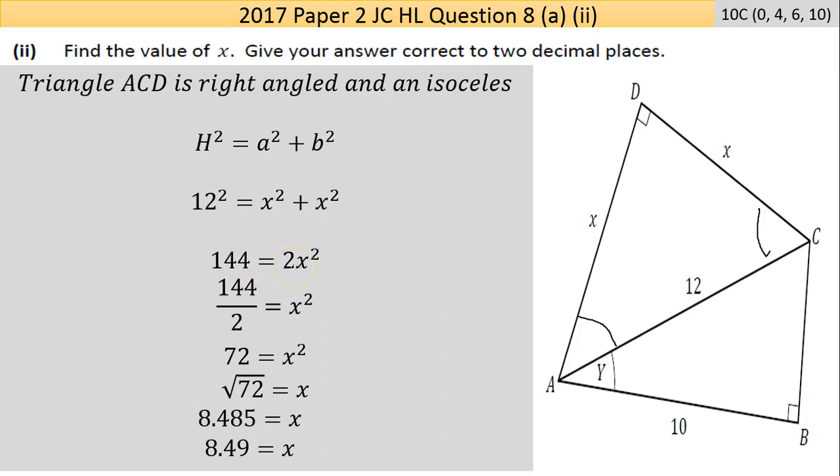Big mistake here - people bring things across with a minus and that sends everything wrong. Two divided into 144 is 72, and that equals some number squared. What number times itself gives 72? It's not a clean whole number, so we bring the square root across.